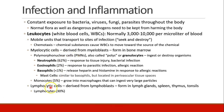Besides the polymorphonuclear cells, we also have monocytes, which grow into macrophages — cells that can ingest very large particles. Those are the myelocytic cells. We also have lymphocytic cells, derived from lymphoblasts, which form in your lymph glands, spleen, thymus, and tonsils — primarily lymphocytes. On a CBC with a differential, about two-thirds are neutrophils, about a third are lymphocytes, and just a small percentage are monocytes, eosinophils, and basophils.